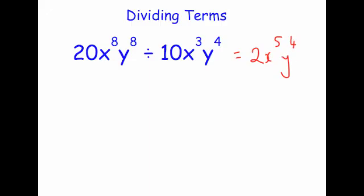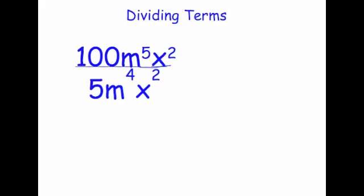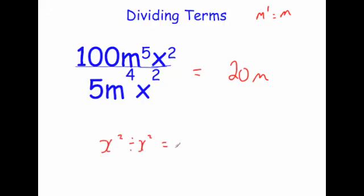Our last example shows that the fraction line also means divided by, just like we looked at at the very beginning. Here we have 100m to the power of 5, x squared, divided by 5m to the power of 4, x squared. 100 divided by 5 is 20; m to the 5 divided by m to the 4 — take away the powers, that's m to the 1, which is just m; x squared divided by x squared is 1, so that cancels out. You're just left with 20m. That's how you divide algebraic terms.